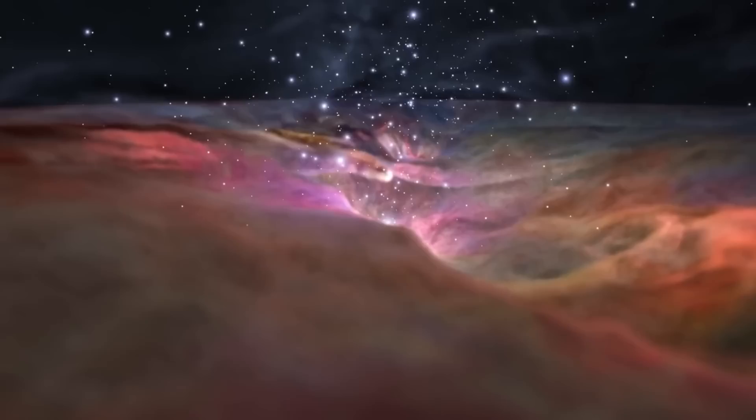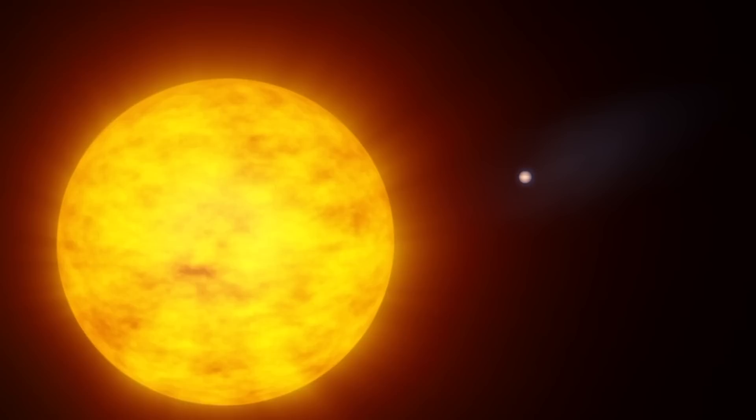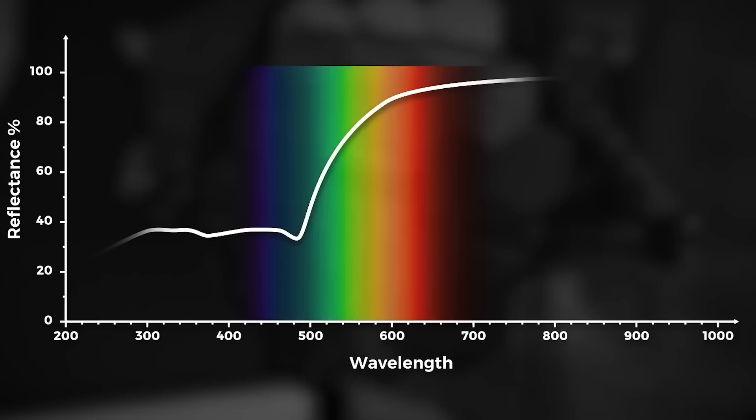These observations, otherwise known as a transit spectrum, allow the scientists to determine precisely what the exoplanet's atmosphere is made of. When light from a host star shines through an exoplanet's atmosphere, the molecules in the atmosphere absorb some of the light in a range of unique wavelengths. Carbon dioxide, for example, absorbs infrared light.